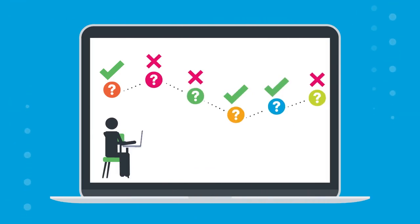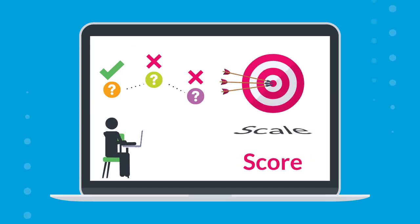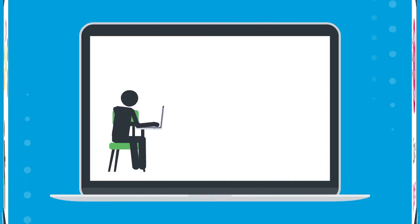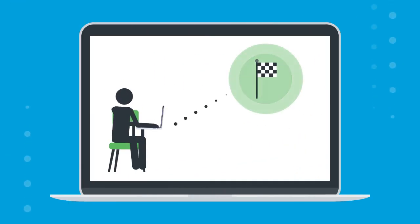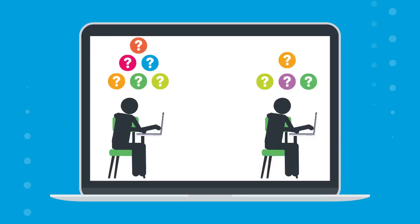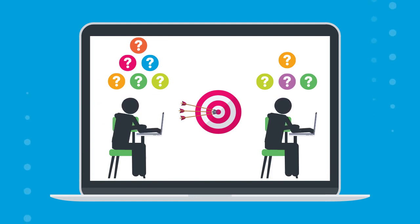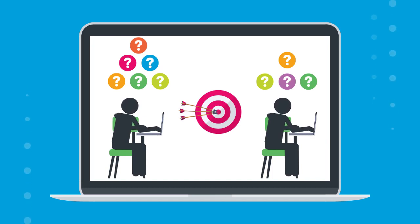As the student answers more questions, the test learns more about what the student does or doesn't know. Every answered question provides greater confidence and precision in the student's scale score. Once the scale score is precise enough, the test is over. That means some students may receive fewer questions than others — it just depends on how many questions it takes to hit that targeted level of precision. In some cases, the test may stop after a set maximum number of questions have been administered.